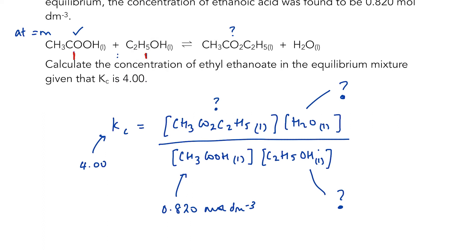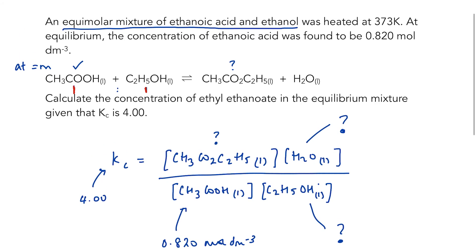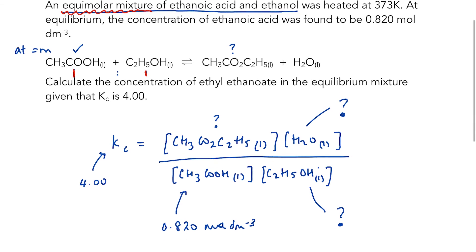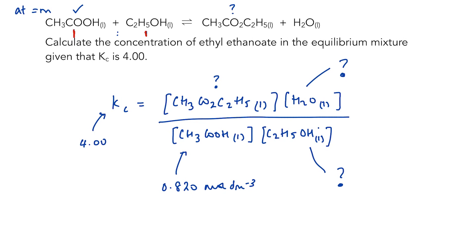Ethanoic acid and ethanol react in a one-to-one molar ratio. I know that I started with the same number of moles of each, so regardless of how much I started with, if I end up with a concentration of ethanoic acid of 0.820 mole per decimeter cubed, I must also end up with a concentration of ethanol of 0.820 mole per decimeter cubed.